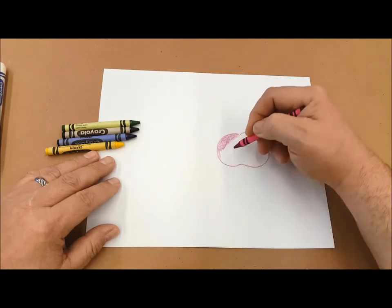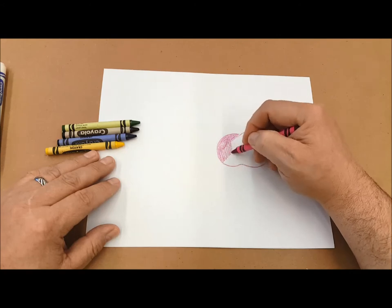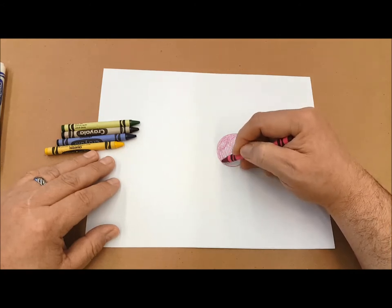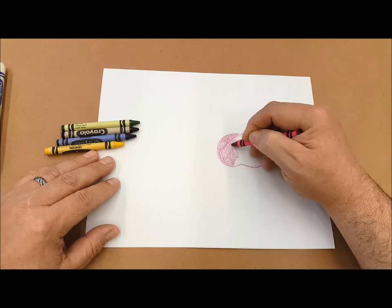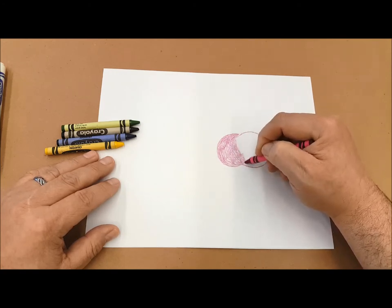Notice when I'm coloring in, I'm starting at the edge, I'm using small parallel strokes to color in. This keeps my work super neat. I'm going to speed this up so you can see me finish coloring in the apple.